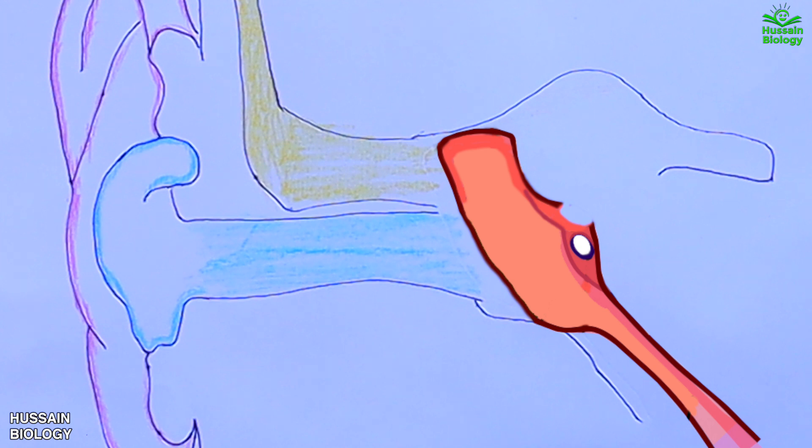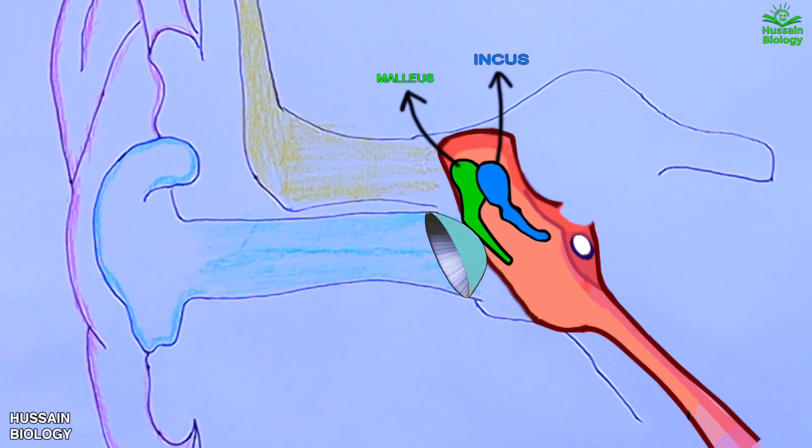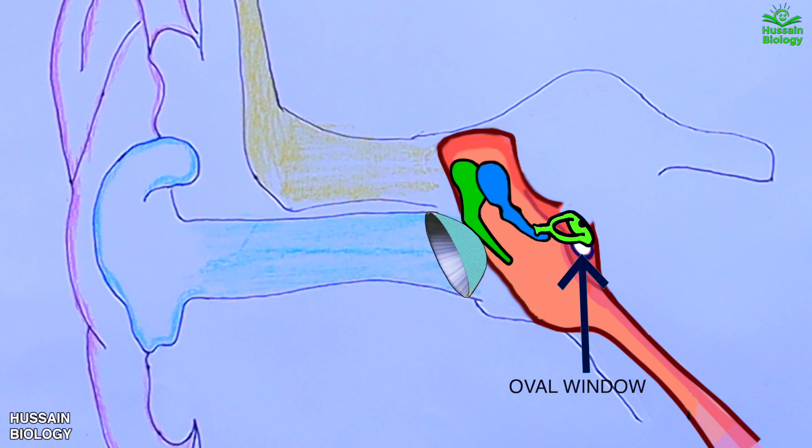Then we have the malleus bone. This malleus is connected with tympanic membrane on one side shown in the diagram, and on the other side is connected with the incus bone that has been shown in the diagram. Furthermore, this incus is connected with the stapes bone, and finally this stapes bone is connected to the oval window by its annular ligament.